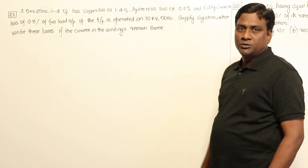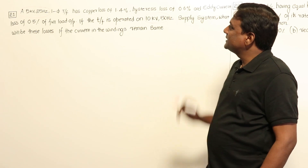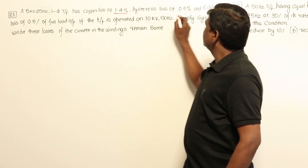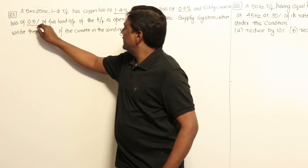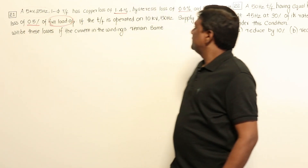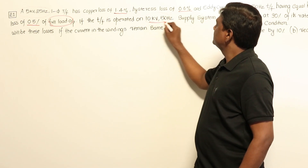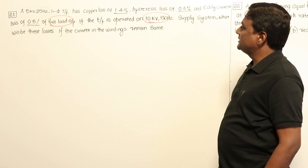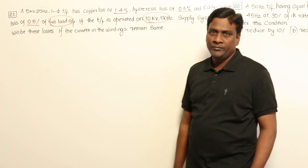Let us solve two beautiful questions. Here a 5kV, 25Hz single-phase transformer copper losses are given, hysteresis losses are given, eddy current losses are given at full load output. If this transformer is operated on a 10kV, 50Hz supply system, what will be these losses if rated current in the windings remains the same?